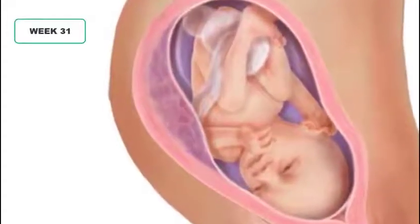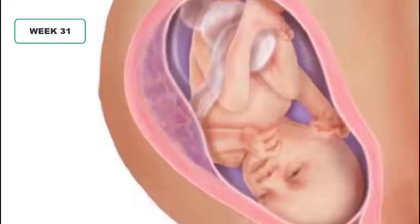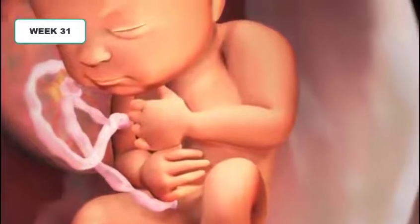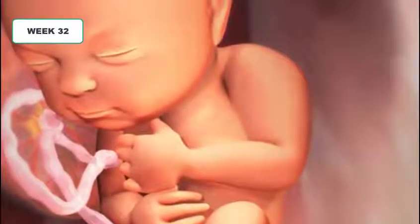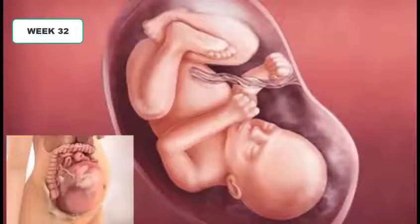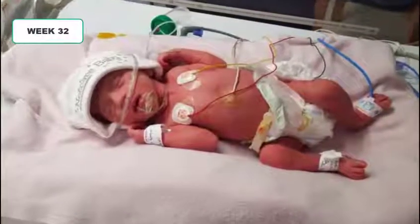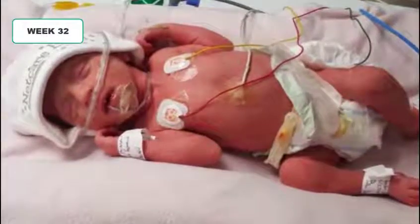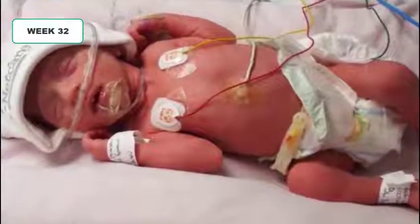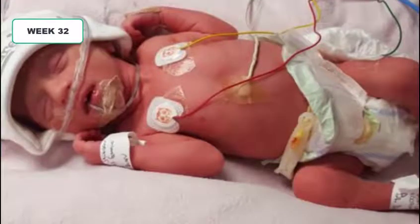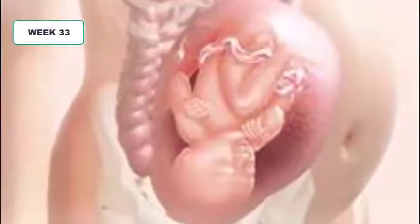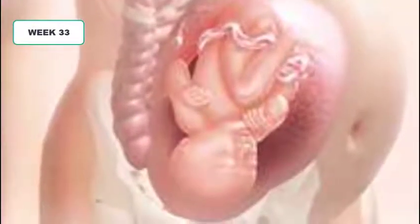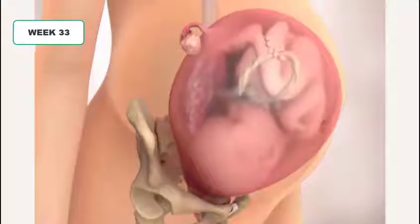Week 31 the baby continues gaining weight and stretching more. The reproductive organs are becoming more and more differentiated and getting mature. At week 32 the baby is ready for life outside the mother's womb — it can survive if born now. However, the brain and lungs are still developing. A premature baby born at 32 weeks of pregnancy or after has a higher chance to survive without remarkable complications in the future. At week 33 the baby is growing bigger and the uterus is getting heavier to support it. Braxton Hicks contractions have started.